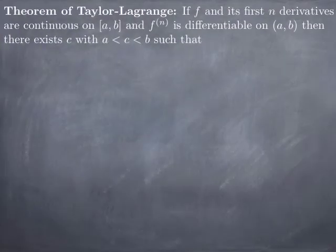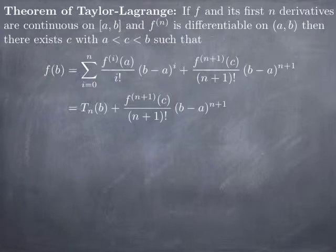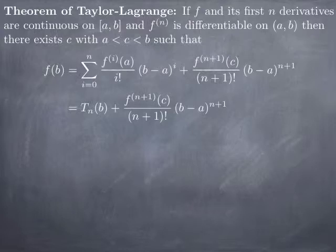The main result in this video is the Taylor-Lagrange theorem. The assumptions are that f and all of its first n derivatives — f, f prime, f double prime, and so on up to the derivative of order n — are all continuous on the closed interval [a, b], and the nth derivative is also differentiable on the open interval (a, b). Then we can find a value c strictly between a and b such that f of b equals the value of the nth Taylor polynomial of f evaluated at b, plus a remainder term.